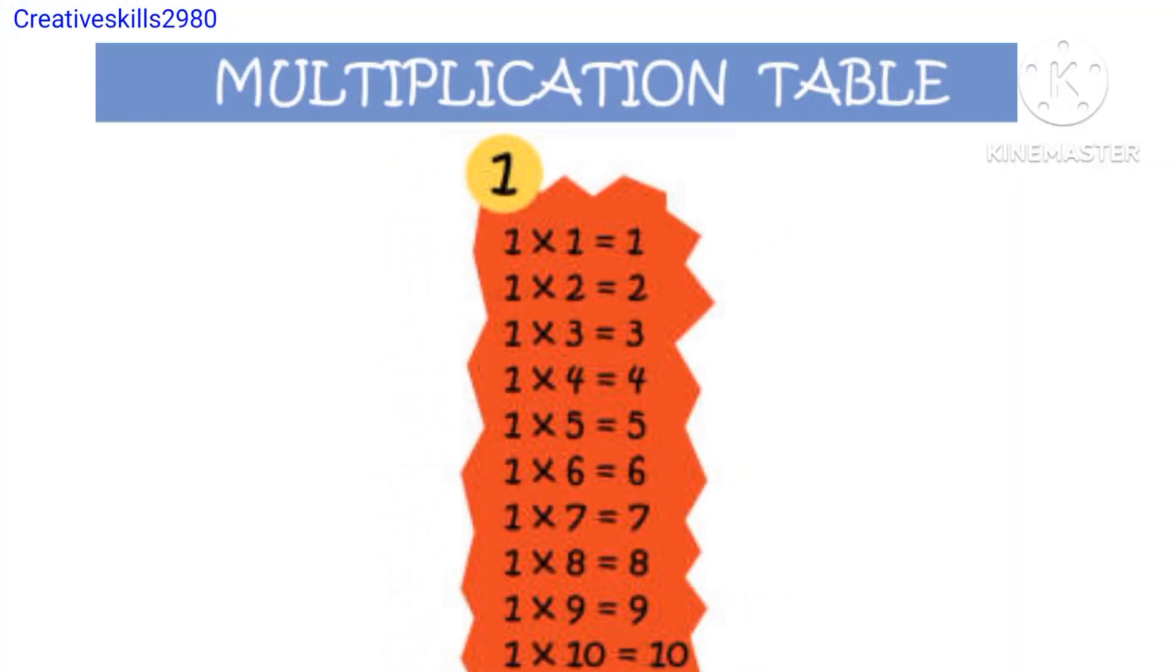1 1s are 1, 1 2s are 2, 1 3s are 3, 1 4s are 4, 1 5s are 5, 1 6s are 6, 1 7s are 7, 1 8s are 8, 1 9s are 9, 1 10s are 10.